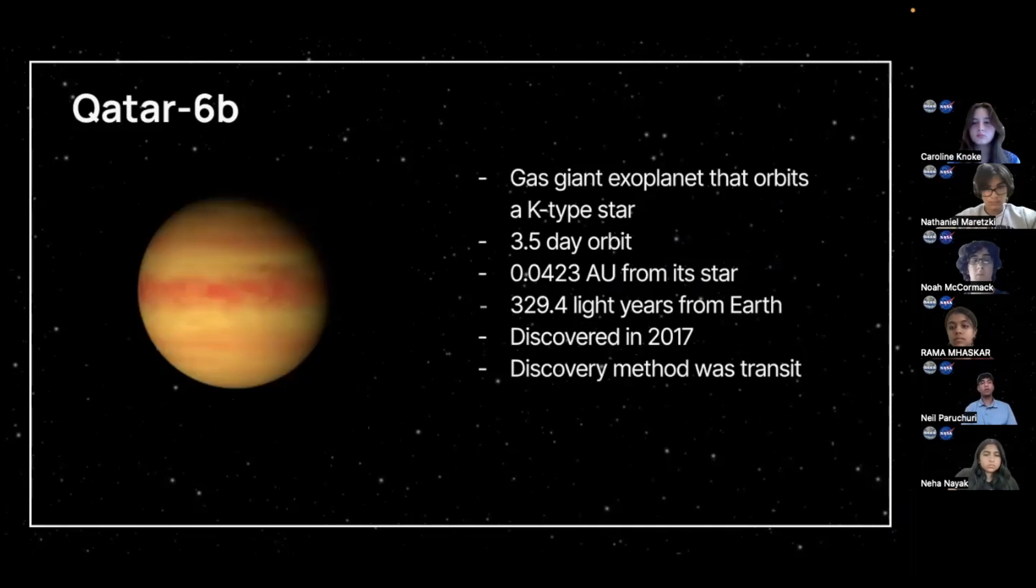Now, the second planet we studied was Qatar-6b. Qatar-6b is also a gas giant exoplanet that orbits a K-type star. A K-type star is the sixth brightest star on the Class System. Qatar-6b has a 3.5-day orbit. It is 0.0423 AU from its star. It is 329.4 light-years from Earth, and it was discovered in 2017. In 2017, it was discovered using exoplanet transit, which is exactly what we did on this project.